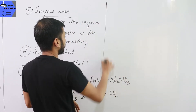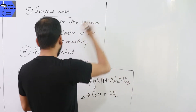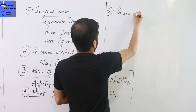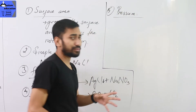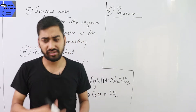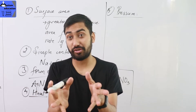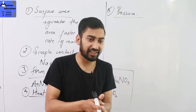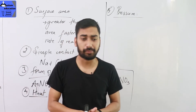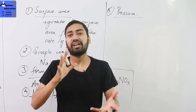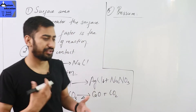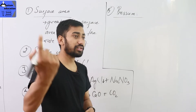The other factor is pressure. Intense pressure affects certain reactions — for example, hydrogenation of oil uses a lot of pressure, around 8 to 10 atmospheres. The whole reaction proceeds due to the applied pressure.